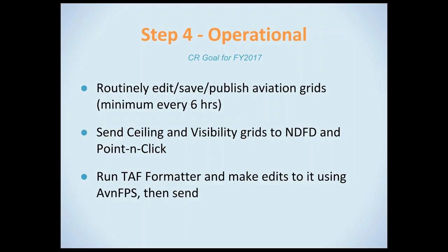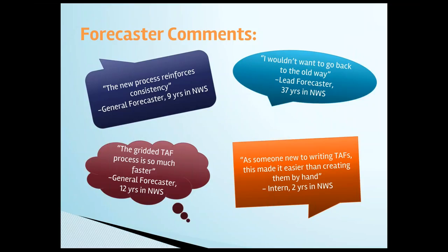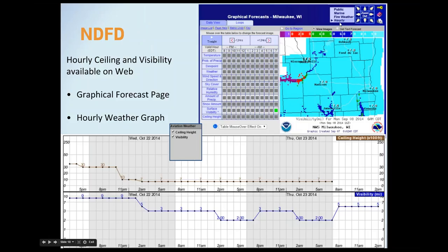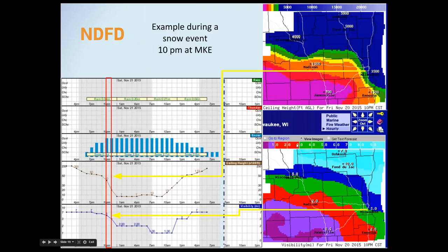A lot of forecasters in our office and at other offices have had very positive comments overall. At NDFD, we send our grids out and can pull them up in the hourly graphical forecast. Here's an example with valley fog showing what hourly weather graphs look like. During a snow event, looking at Milwaukee along the lake at 10 p.m., you can see ceilings and visibility lowering from west to east as the snow moves in. The hourly weather graph shows users the trend expected with ceiling and visibility over the next several hours.